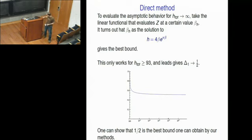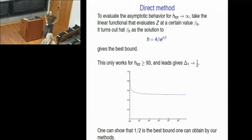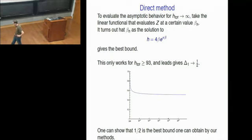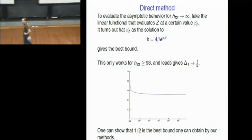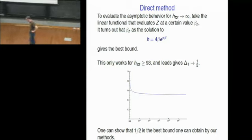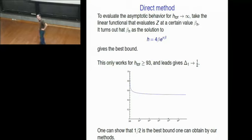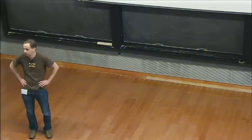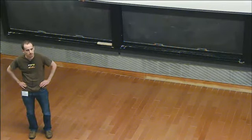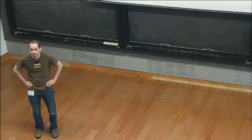Question: Have you tried applying this method to heterotic string models? We haven't, but it would be absolutely straightforward to do. My guess would be that your constraints would be slightly weaker because you don't have (2,2) supersymmetry anymore, but the technology is definitely there so one can do it. Let's thank our speaker again.